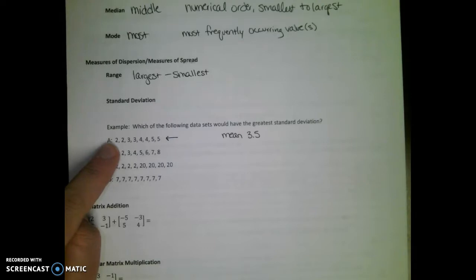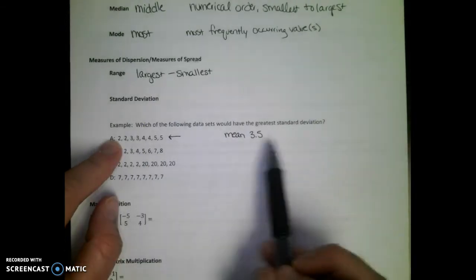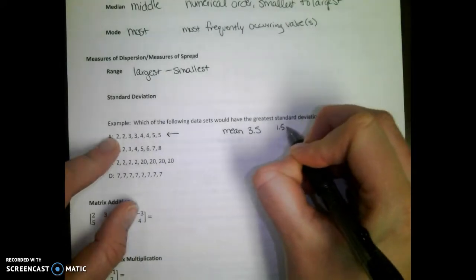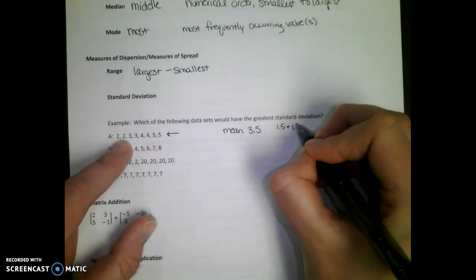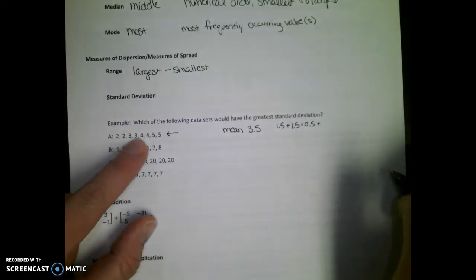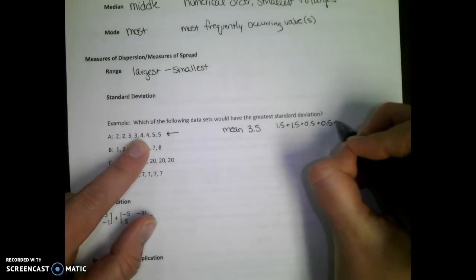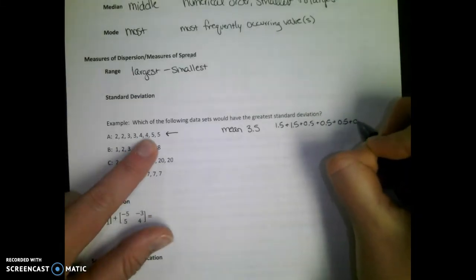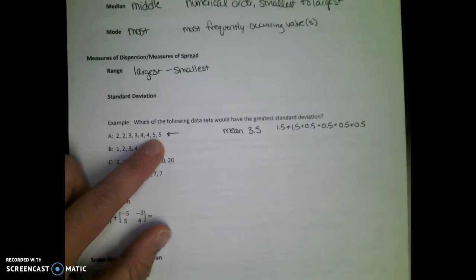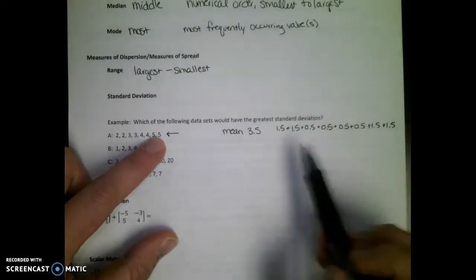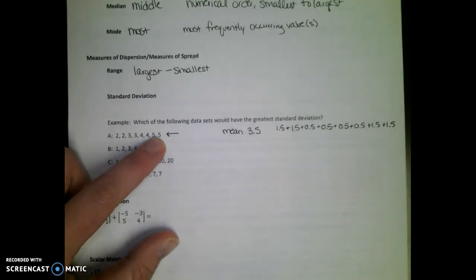I'm going to look at how far away from the mean each of these data values are. So how far is 2 away from 3.5 if you looked at them on a number line? 1.5. And if you can't figure that out, do 2 minus 3.5 and then ignore the negative. So 1.5. The next one is 1.5 units away from the mean. 3 is 0.5 units away from the mean. The second 3 is 0.5 units away from the mean. 4 and 4 are both 0.5 units away from the mean. And how far are 5 and 5 from the mean? 1.5 and 1.5. So these are all of the distances from each data value to the mean.